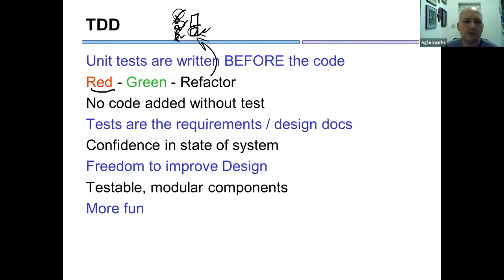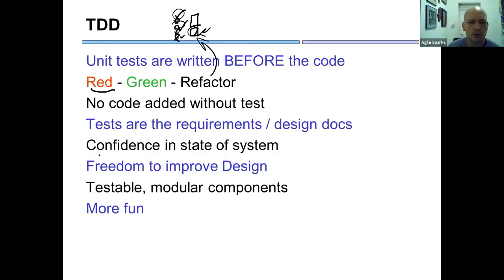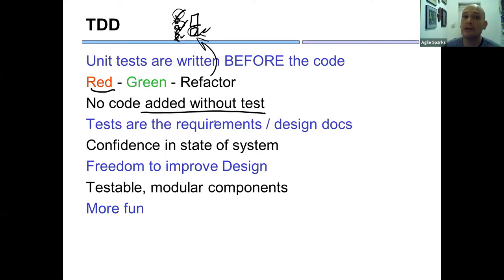The core principle of TDD: no code added without tests. That's very important. If you want a new feature, you need to add a new test for that feature first.